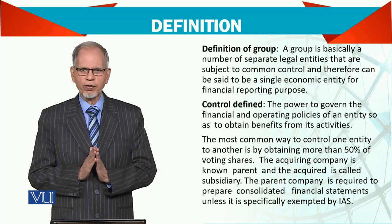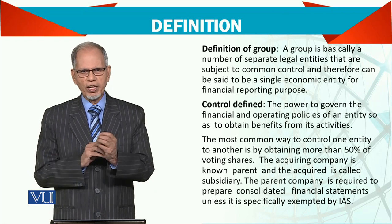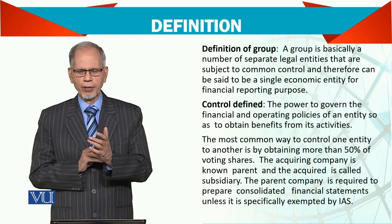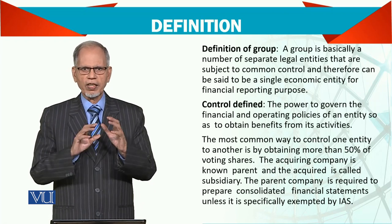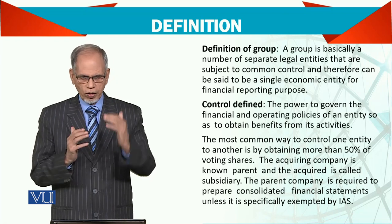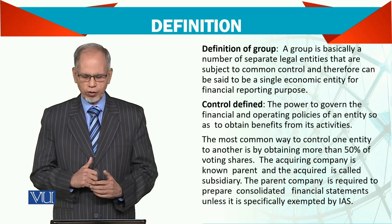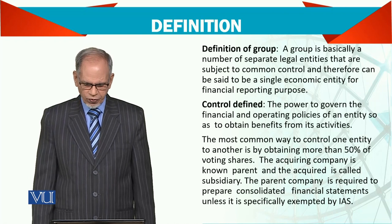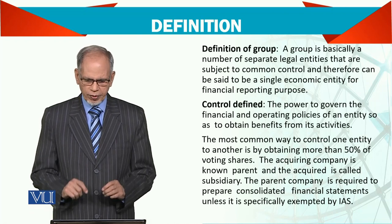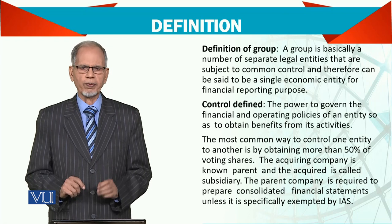The key word here is common control. Maybe there are three companies — parent, subsidiary, and subsidiary — but control is at one place, common control, where the parent is controlling all the others. Therefore, they can be said to be a single economic entity for financial reporting purposes.